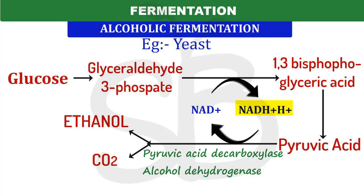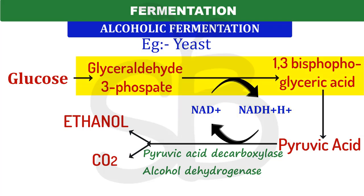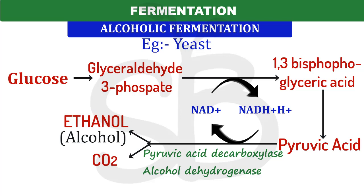In this process, NADH + H⁺ molecules donate hydrogen, reducing pyruvic acid to ethanol plus carbon dioxide. NADH + H⁺ is thereby converted back to NAD⁺. These NAD⁺ molecules are then recycled and utilized back in glycolysis. Carbon dioxide is also produced in alcoholic fermentation, along with ethanol.